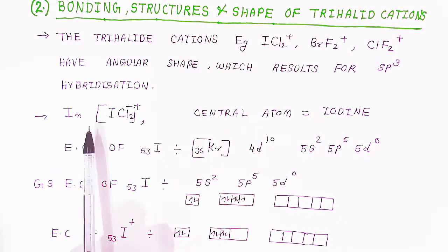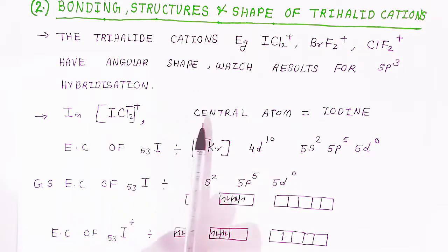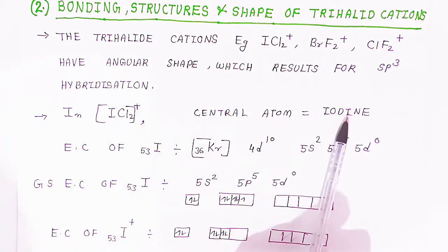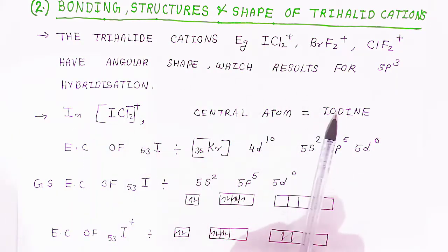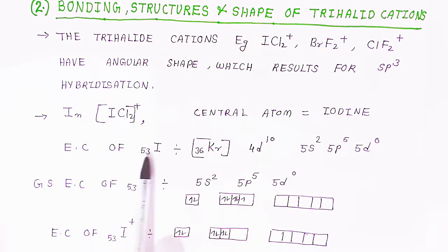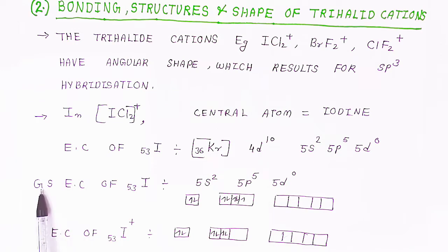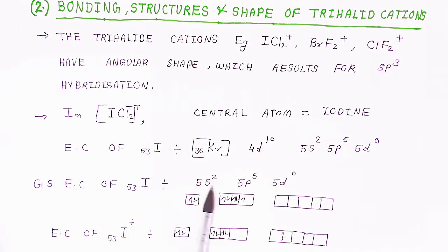When talking about the cation ICl₂⁺, the central atom will be iodine. The electronic configuration of iodine 53 is [Kr]36, 4d¹⁰, 5s², 5p⁵, 5d⁰. At ground state, the valence atomic orbitals participating in bonding are 5s², 5p⁵, and 5d⁰.